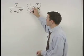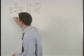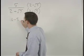Distributing in the numerator, we have 10 minus 5 root 7.